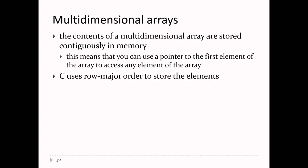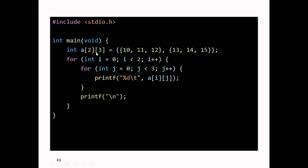It turns out that when you create a multi-dimensional array, the C standard says the elements are stored contiguously in memory. This thing here has two arrays of size three, a total of six ints. When C allocates memory for this, it allocates memory for six ints and sticks them all beside one another. Row one comes first, and then the elements of row two come next.